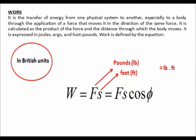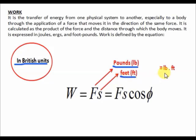Now let us derive the units for work in British units. The unit for force F should be in pounds, denoted as lb, and the distance S should be in feet, denoted as small letter ft. Pounds multiplied by feet is equivalent to foot-pounds.